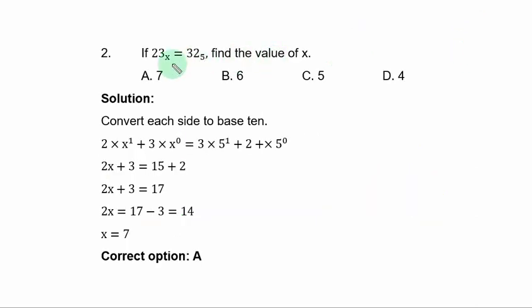Question 2. If 23 base x is equal to 32 base 5, find the value of x. Here, you simply convert each side to base 10. To do that, you multiply each digit by the base number and you assign the position of each digit to the base starting from 0.